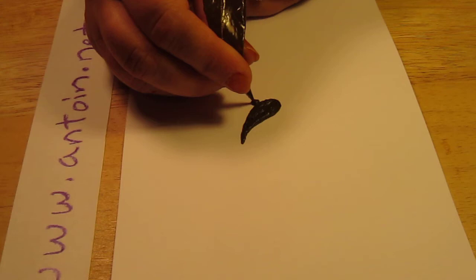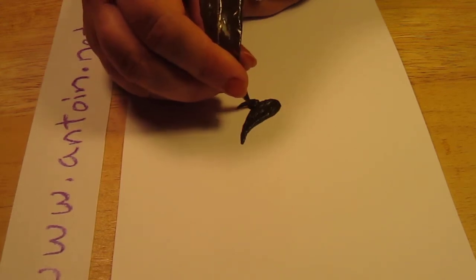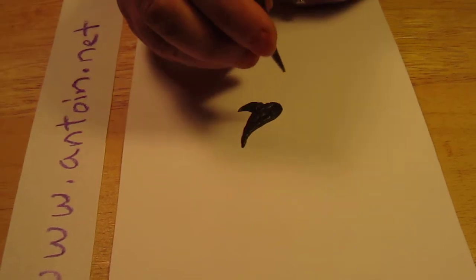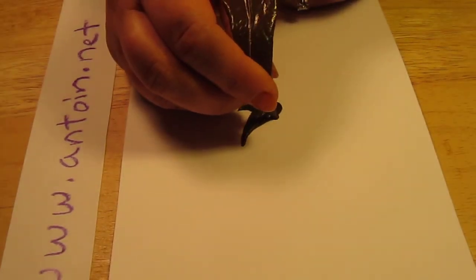Then you're going to give it a dorsal fin, which again is just teardrops, and a flipper.